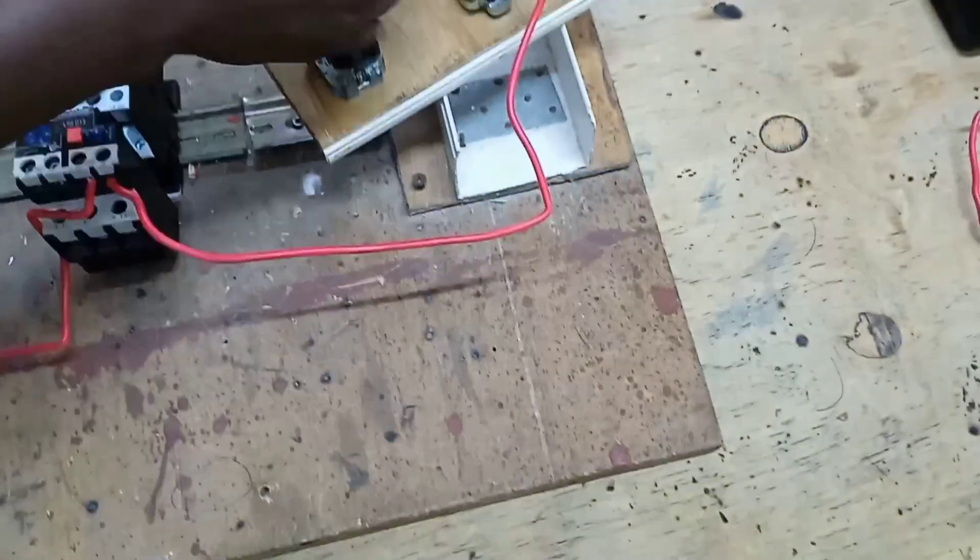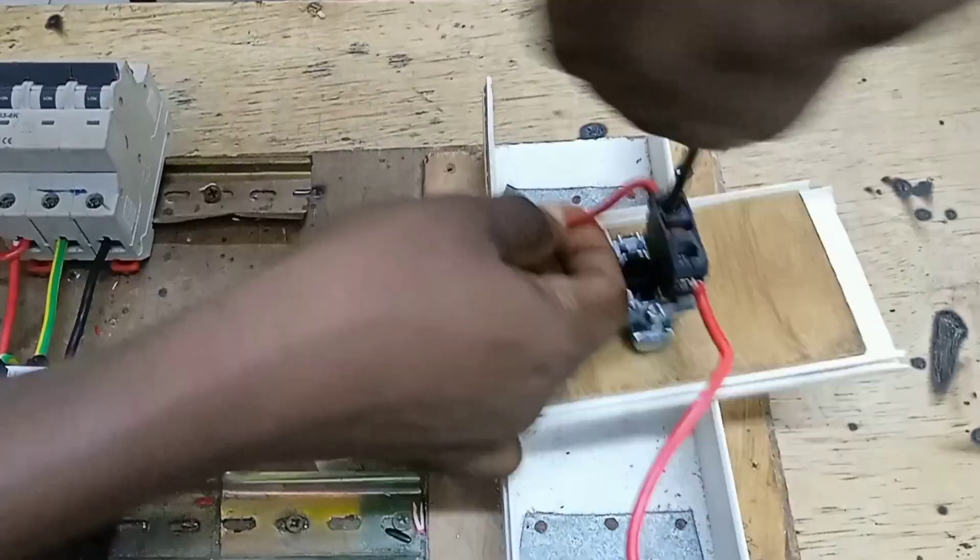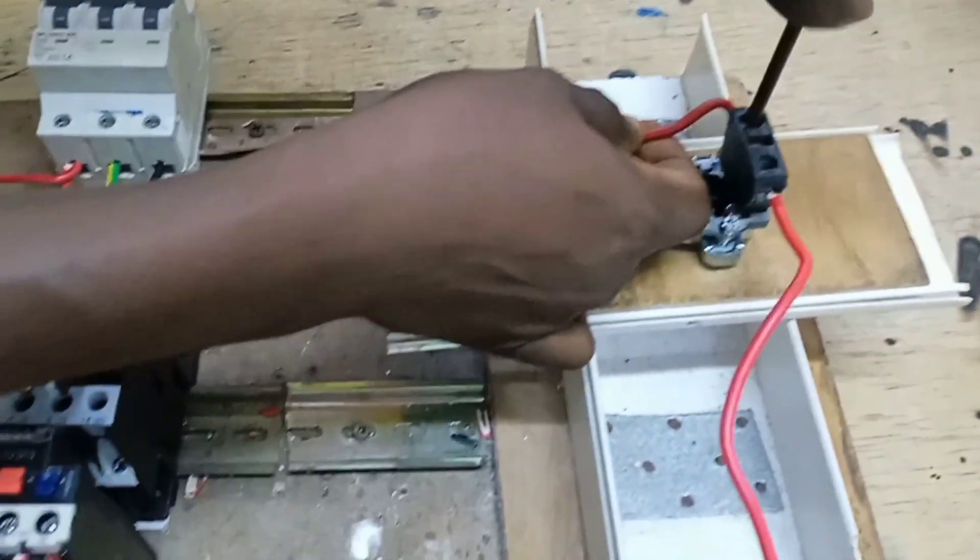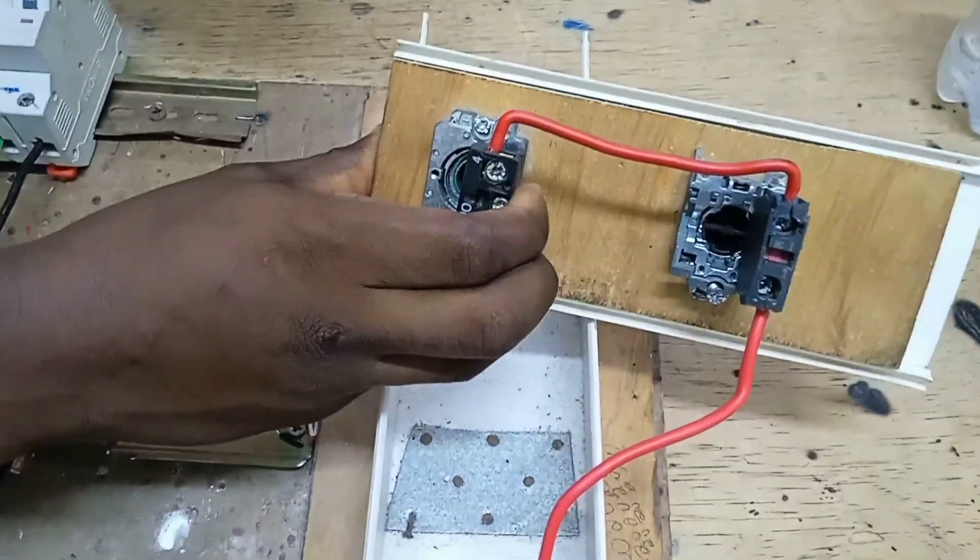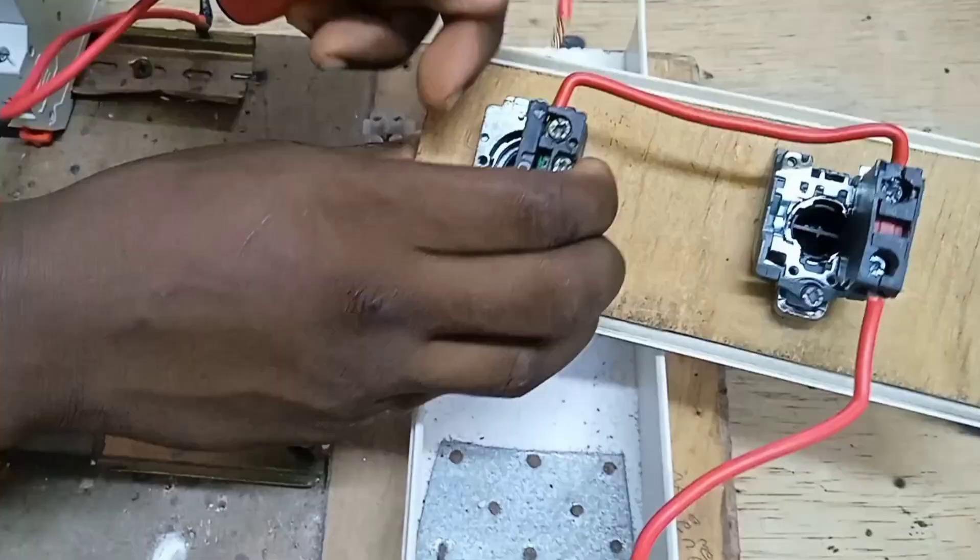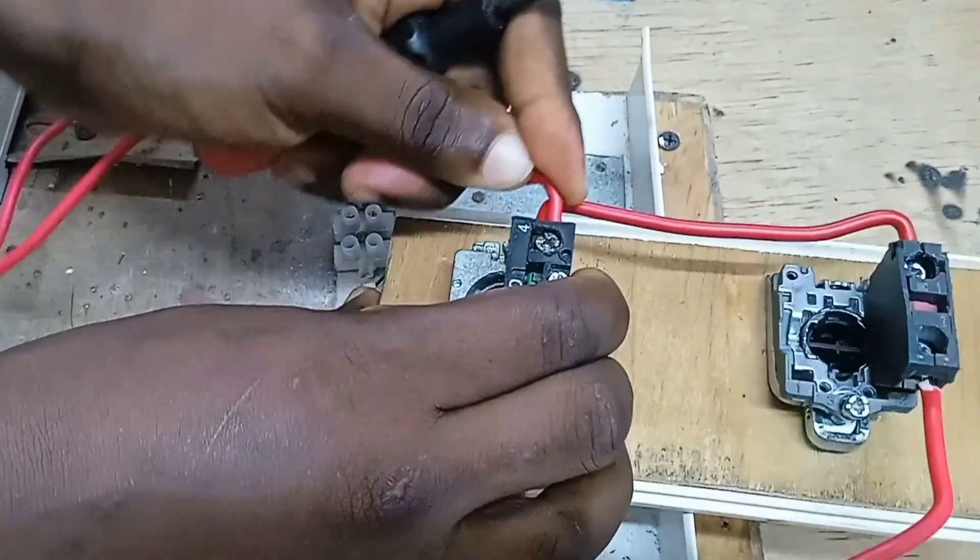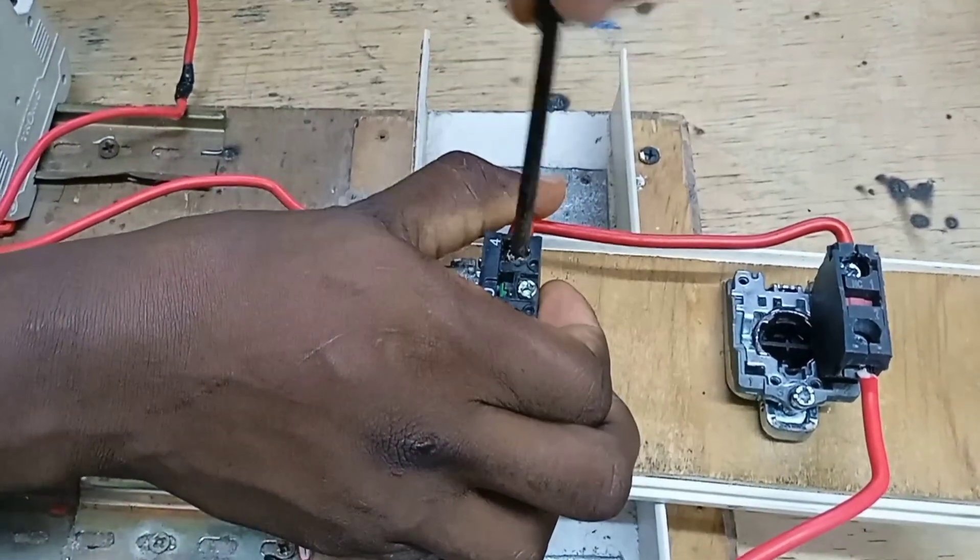We connect this cable to the output of the stop push button. As we connect it there, we connect this cable which goes for hold-on. Connect these two there at the input of the stop push button.